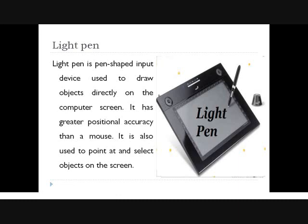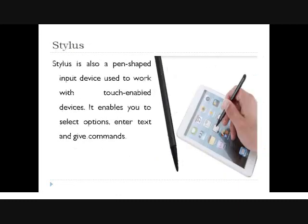The light pen is a pen-shaped input device used to draw objects directly on the computer screen. It has greater positional accuracy than a mouse — you can move with greater precision using this light pen. It is also used to point and select objects on the screen.